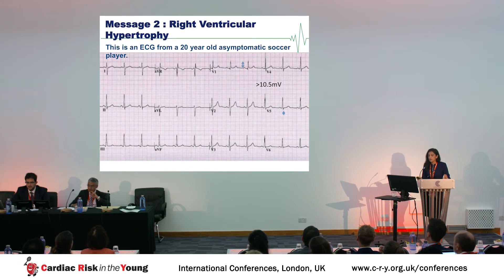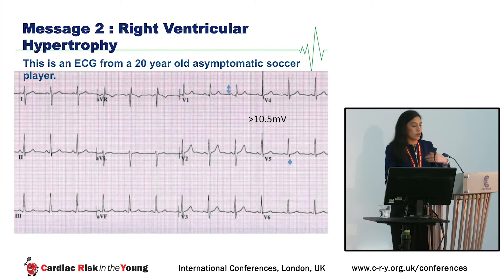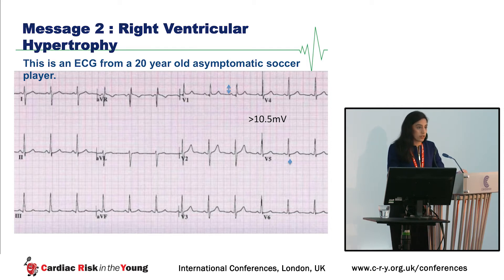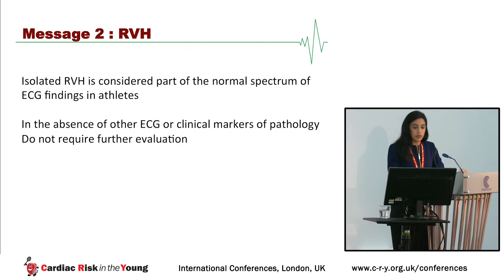Message two: this is an ECG of a 20-year-old asymptomatic soccer player with right ventricular hypertrophy. This is fairly common, identified in up to 13% using the Sokolow-Lyon index — the R-wave in V1 and the S-wave in V5 or V6, whichever is the largest, being greater than 10.5 millivolts. Again, voltage criteria for right ventricular hypertrophy correlates poorly with increased RV wall thickness on imaging. Message two: isolated right ventricular hypertrophy is part of the normal spectrum of ECG findings in athletes and does not warrant further evaluation in the absence of other ECG or clinical markers of pathology.